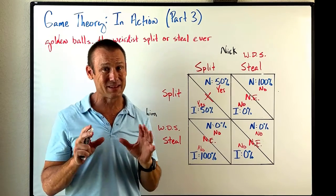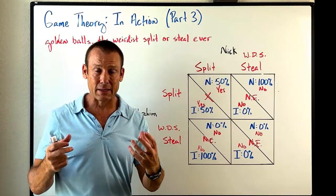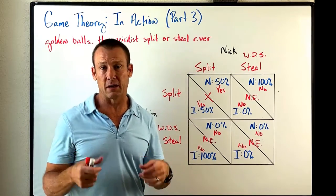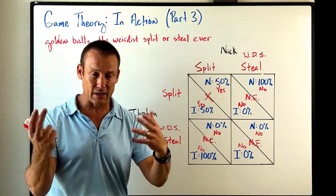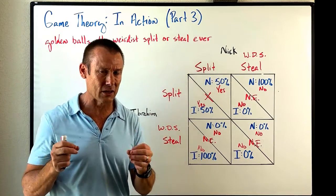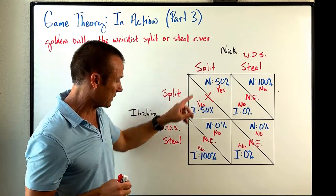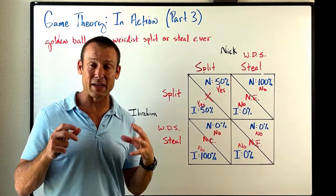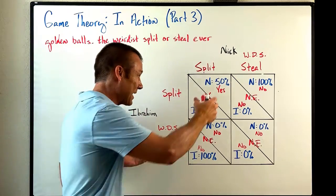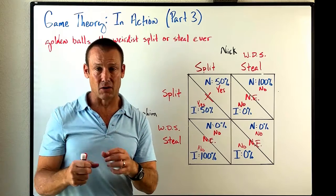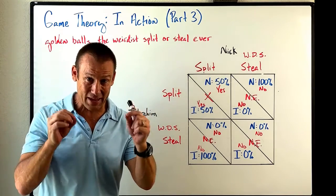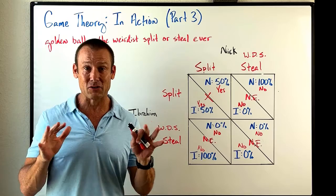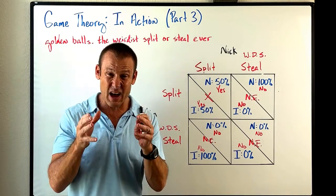What's the most boring outcome we could get in this game show? It would be if everybody just split every time — split, split again, split, split. I mean, sure, they're acting nice and being honest with each other, but it's not really good television. Good television is when somebody splits and somebody else steals, or vice versa, or when they both steal and go home with nothing. That's the shock value — the game was created to pull us to those particular cells. So now we have to get to the game we watched, which was Nick and Ibrahim. It's a very interesting video, and when you analyze it, it gives you some pretty cool insights.